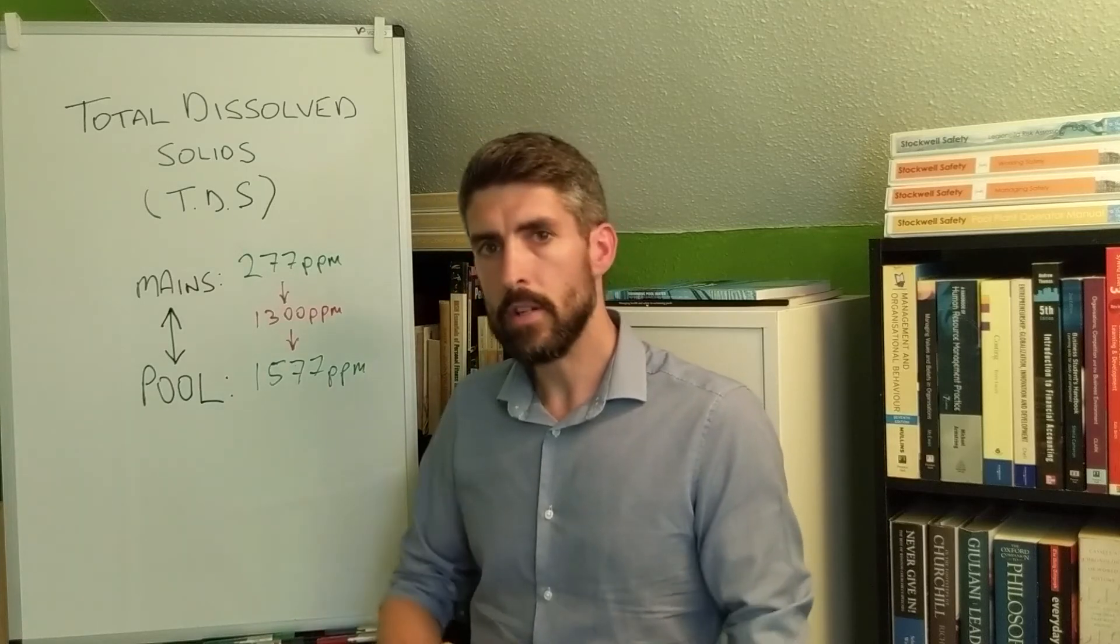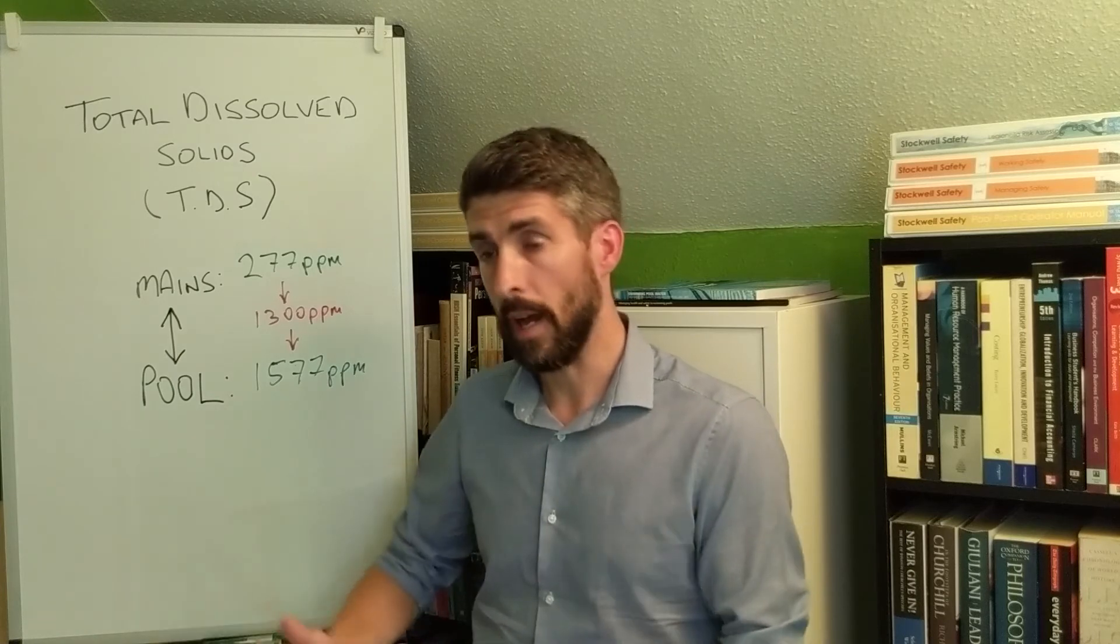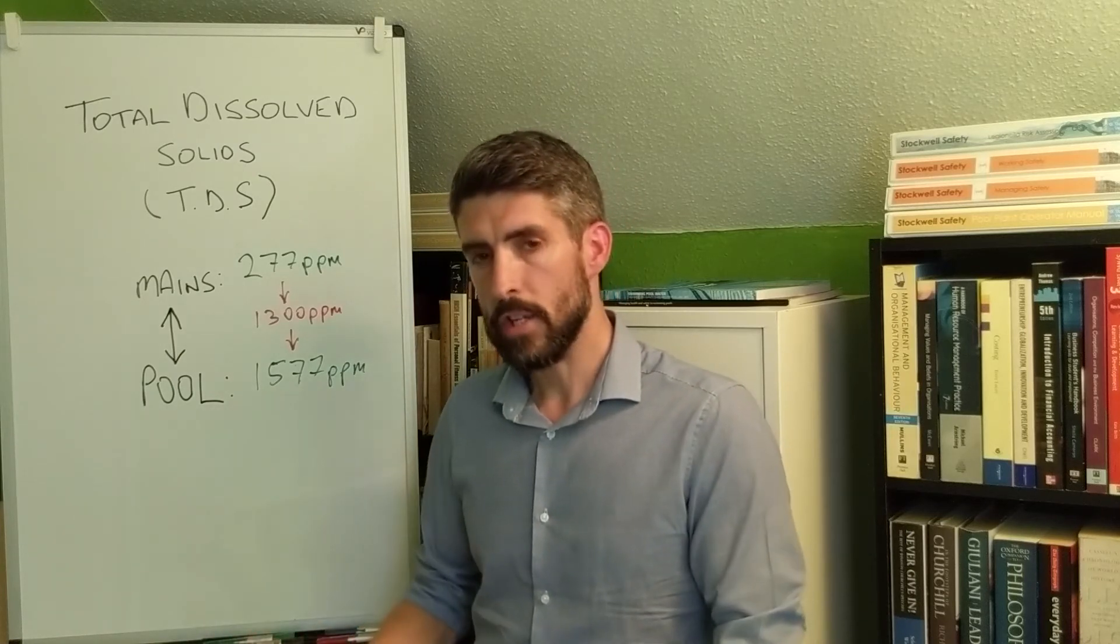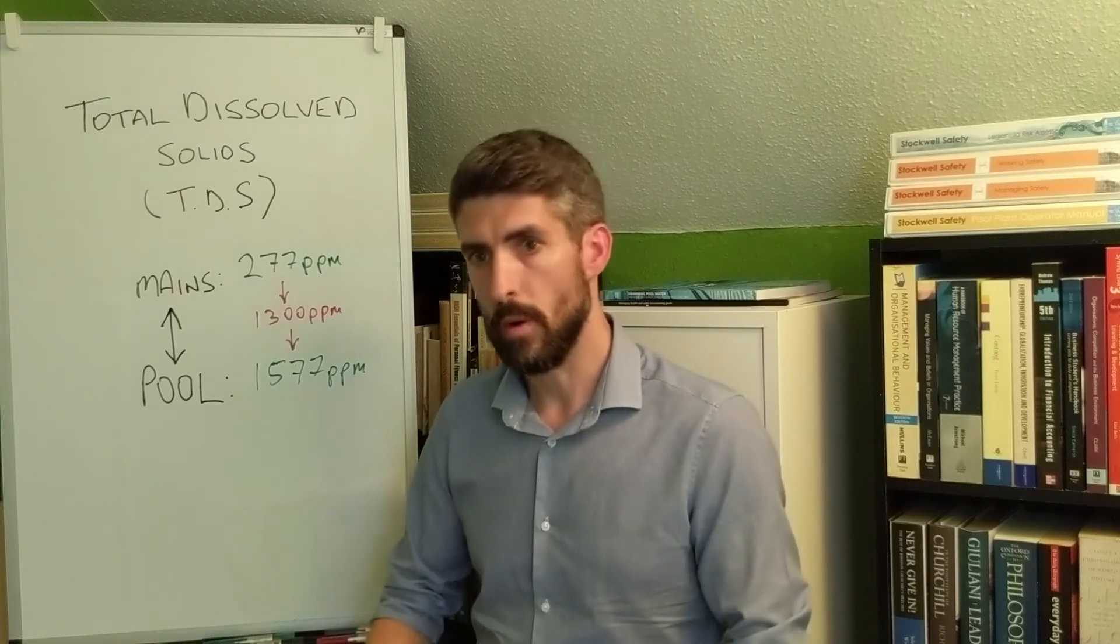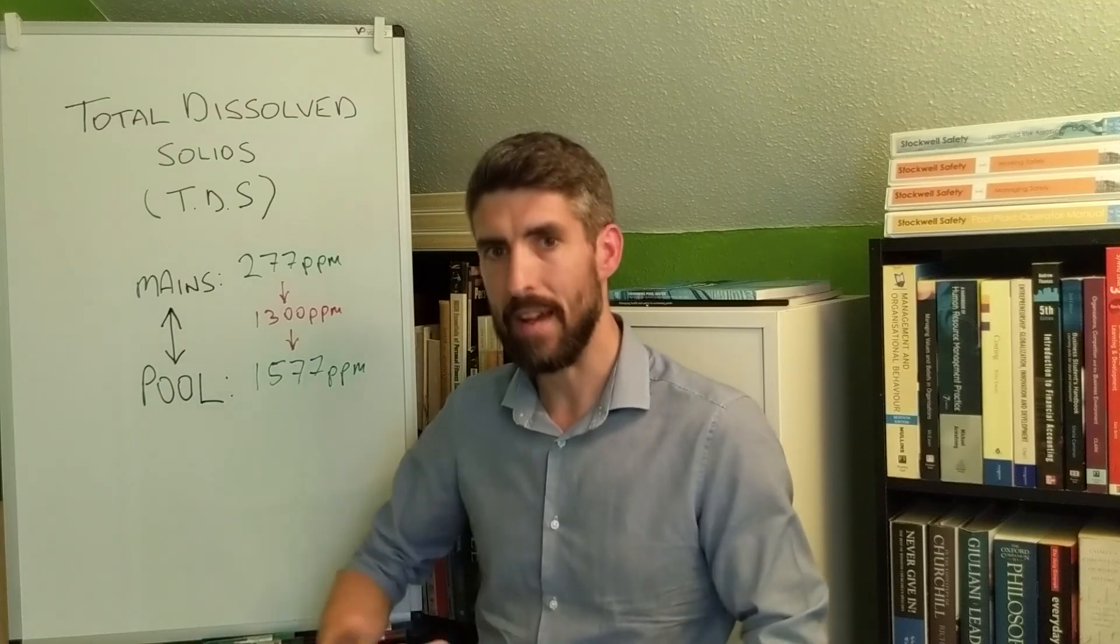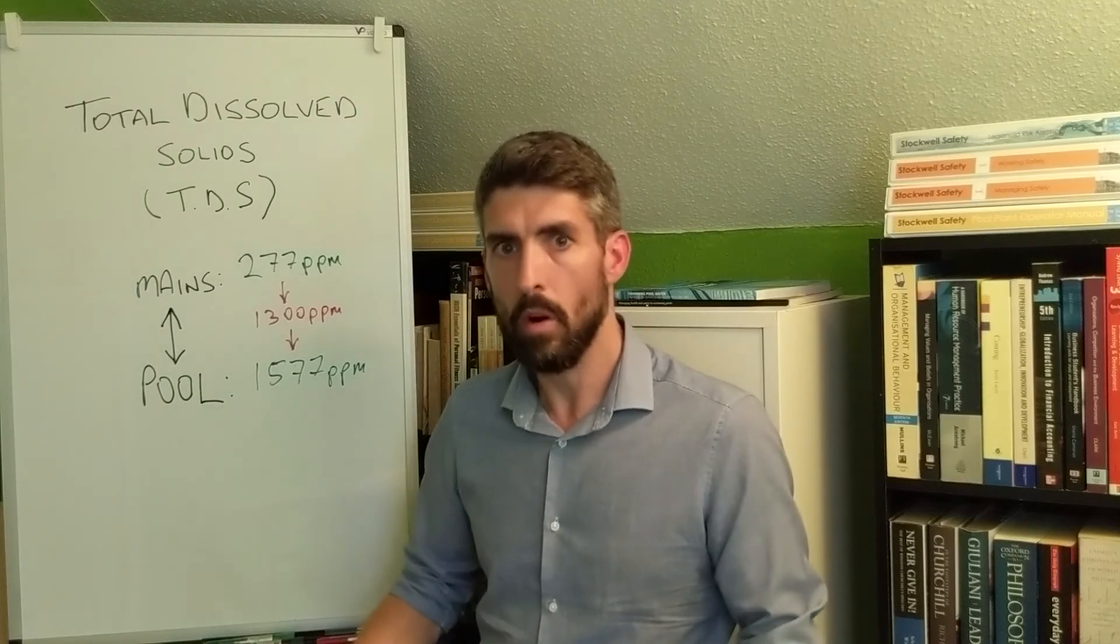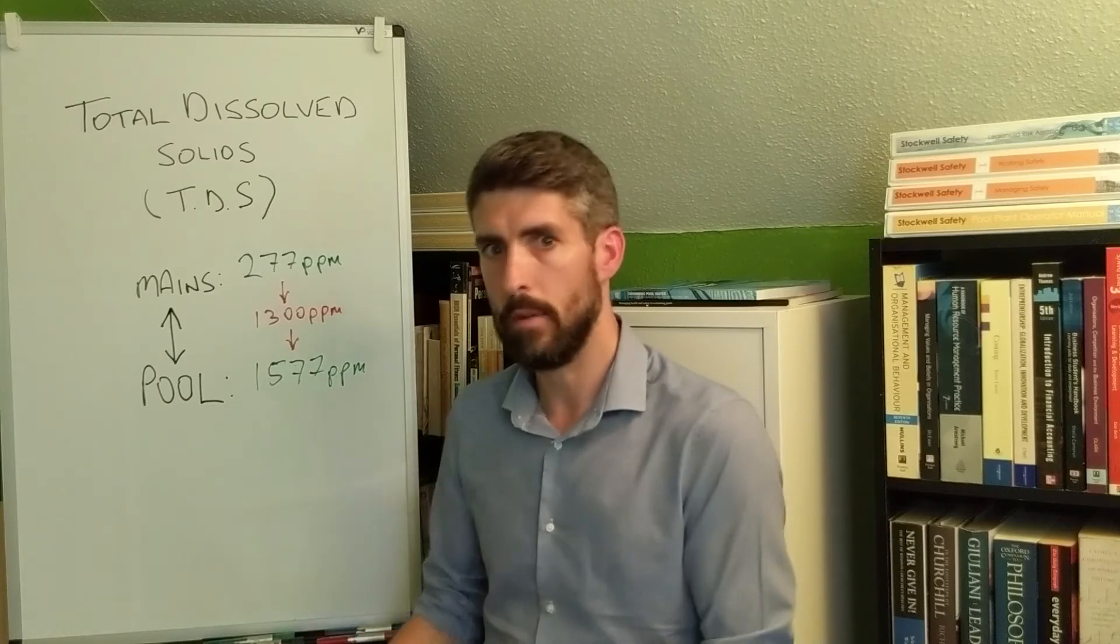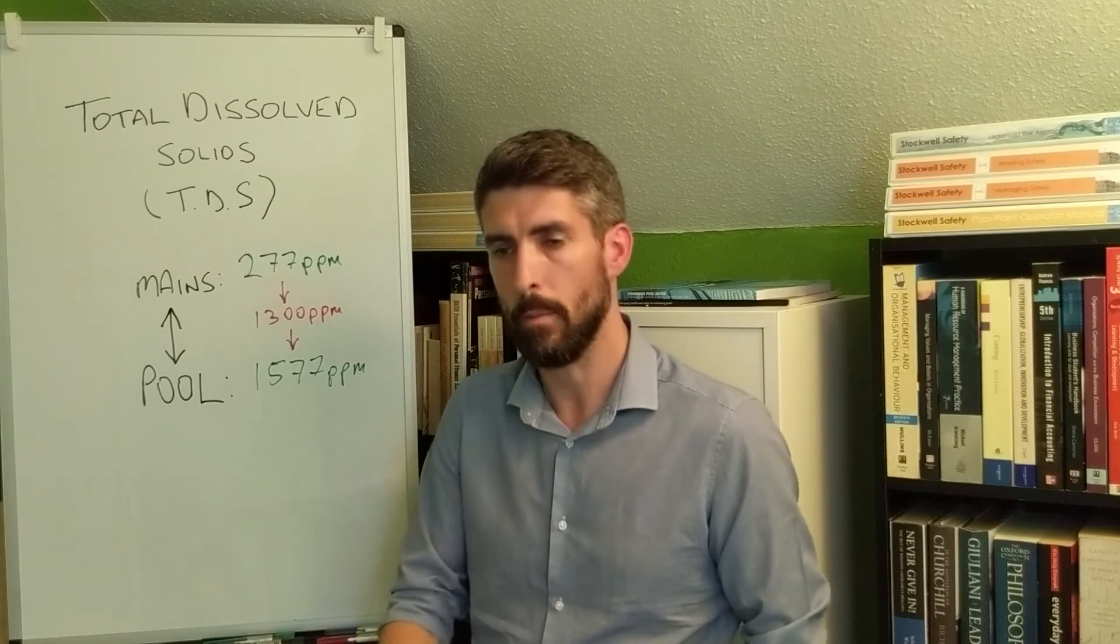If you find yourself in a situation where you've got TDS levels that are much higher than you'd like and you want to bring them down, the way to do that is by dilution - by getting fresh water in there. There's a common saying: the solution to chemical pollution is dilution, so get fresh water going in. Adding more chemicals is not going to work. You can't add chemicals to get rid of chemical pollution.